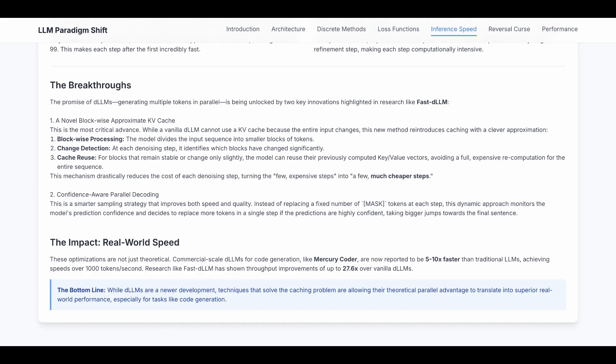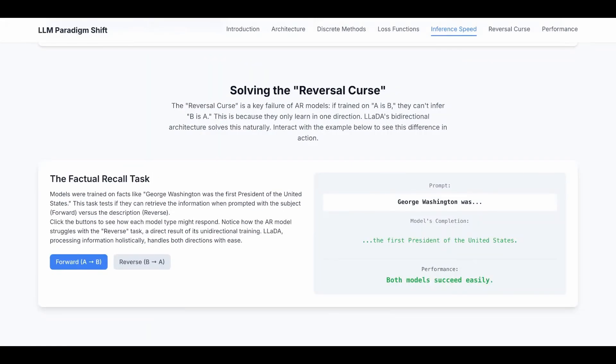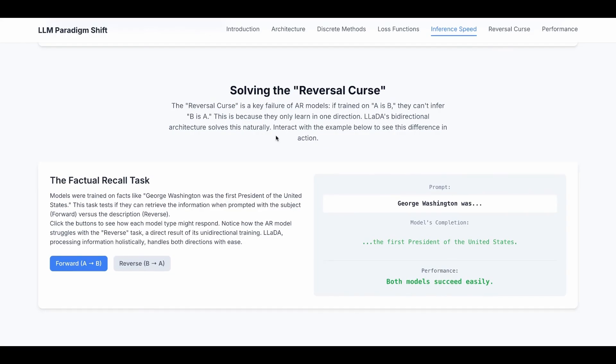Before we end this talk, I want to briefly talk about reversal curse, which is a very interesting problem and one of the reasons we want to use diffusion compared with autoregressive. The reversal curse is a key failure of autoregressive models. If trained on A is B, they can't infer B is A. This is because they only learn in one direction. Bi-directional architectures like BERT solve this naturally.